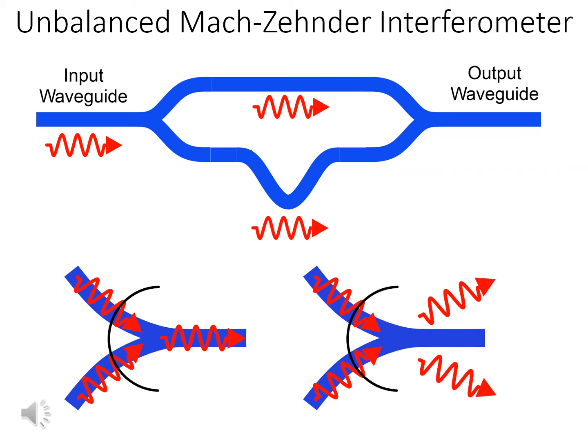On the other hand, if the light beams are out of phase at the output, light radiates away from the device, and there is no light in the output waveguide.